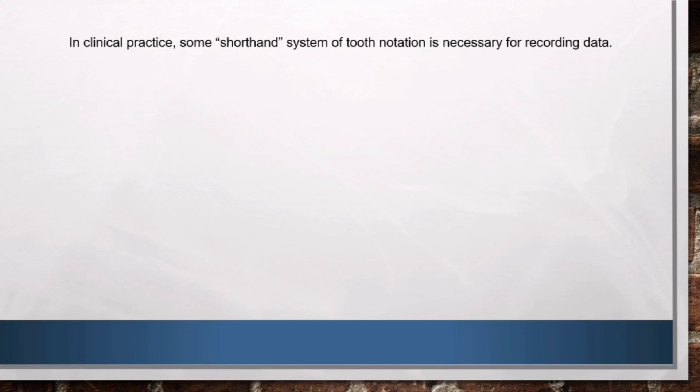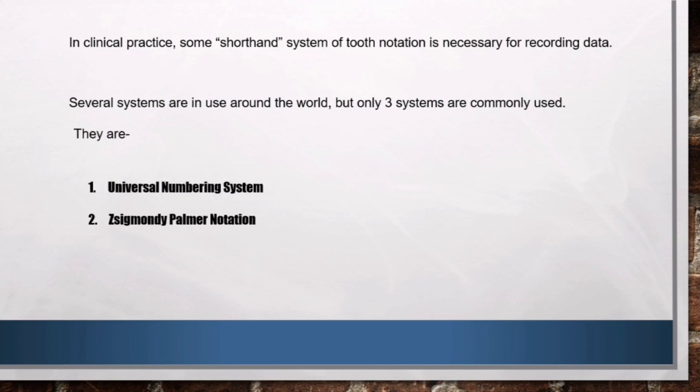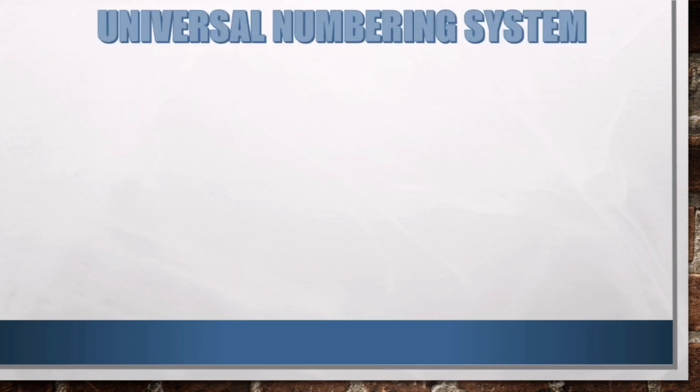In clinical practice, some shorthand system of tooth notation is necessary for recording data. Several systems are in use around the world but only three systems are commonly used. They are the Universal Numbering System, Sigmondi-Palmer Notation, and Federation Dentaire International, i.e., FDI.